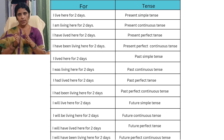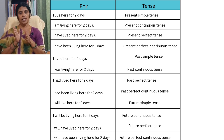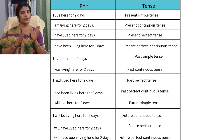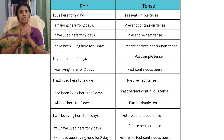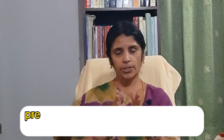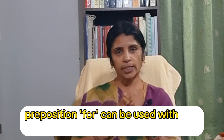'I will be living here for two days' — future continuous tense. 'I will have lived here for two days' — future perfect tense. 'I will have been living here for two days' — future perfect continuous tense. So the preposition 'for' can be used with any tense.